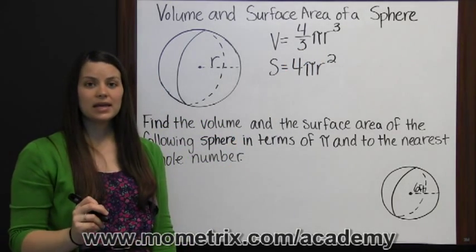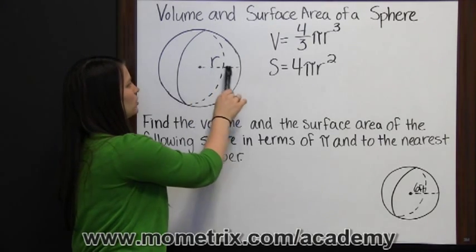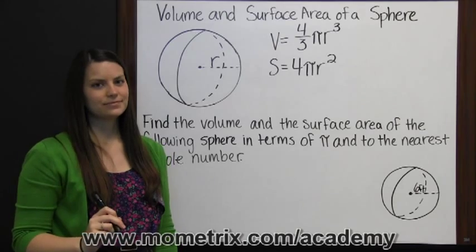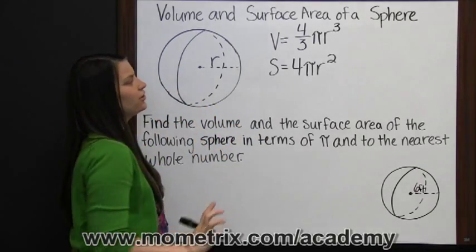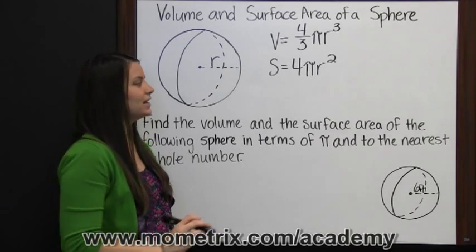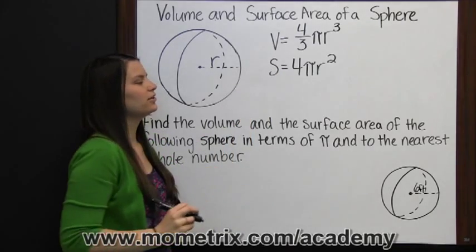The radius is a segment that goes from the center of the sphere to a point on the outside of the sphere. Surface area is the area of the complete surface of the sphere, and it's found by multiplying four times pi times radius squared.